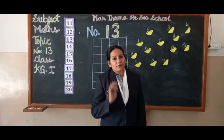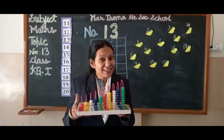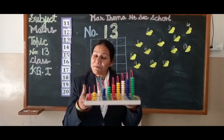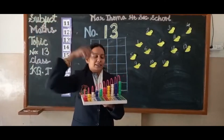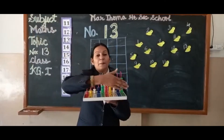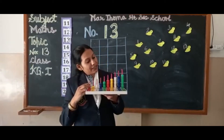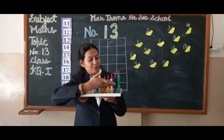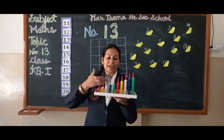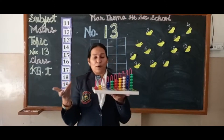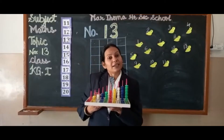So our oral work is over. So dear students, what is this? These are beads. You all will know. So these are beads — wow! How many colors are here? Green, blue, white, yellow, red. Again green, blue, white, yellow and red. So let's start counting.